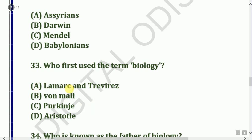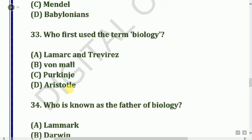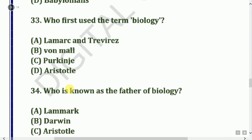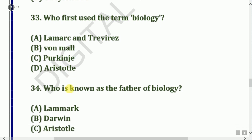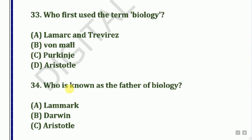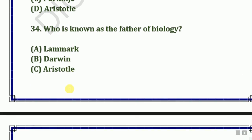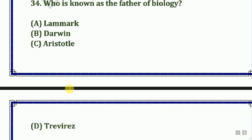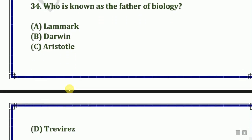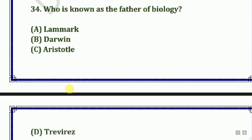Next question: Who is known as the father of biology? Options: Lamarck, Darwin, Aristotle, or Treviranus. The answer is Aristotle.